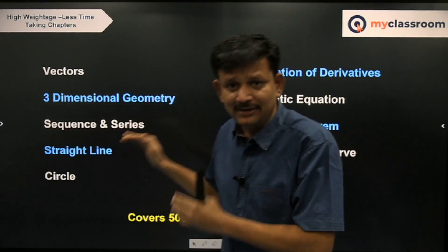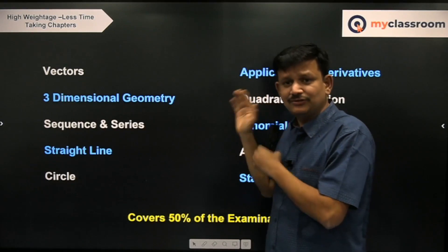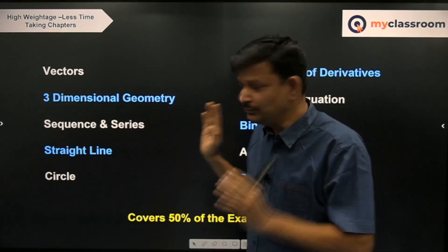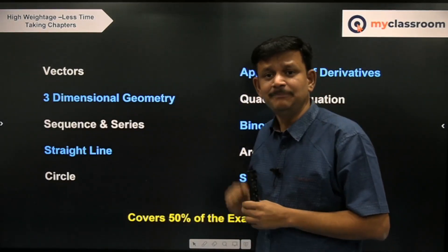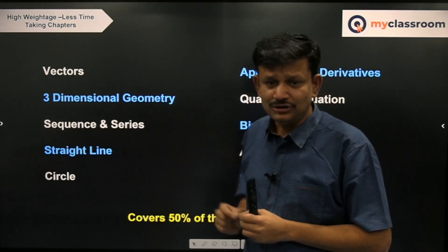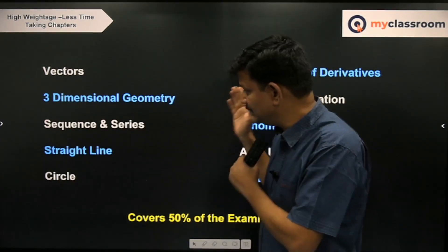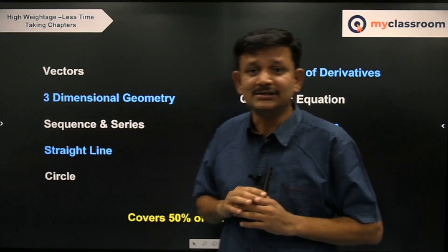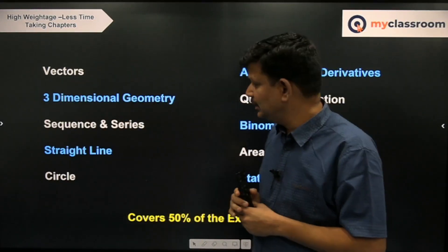Sequence and Series is a very relevant topic — plenty of questions are asked, at least two questions every year from this chapter. AP and GP you have been doing for years, so that is something you will be comfortable with. AGP and infinite series questions on AGP is something you have to revise. VN method and telescopic cancellation is something you have to focus on — practice at least 5 to 10 questions on telescopic cancellation. AM-GM inequality is again very important and can be covered in a very short span of time.